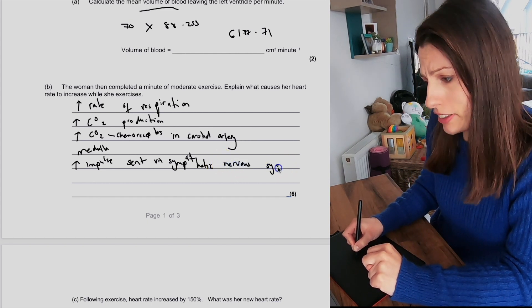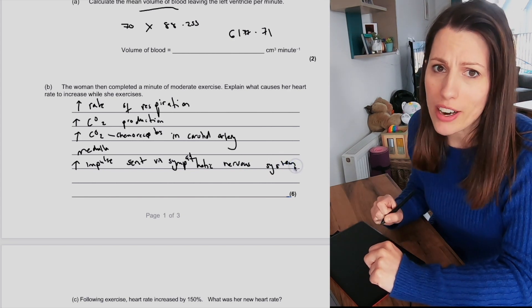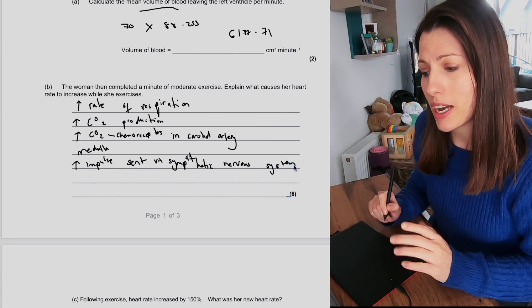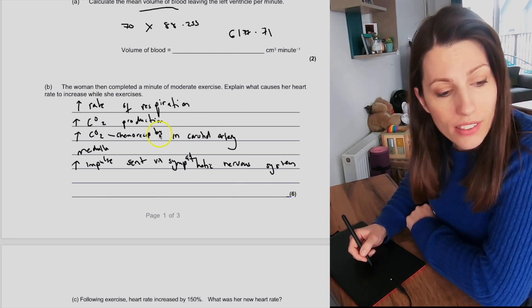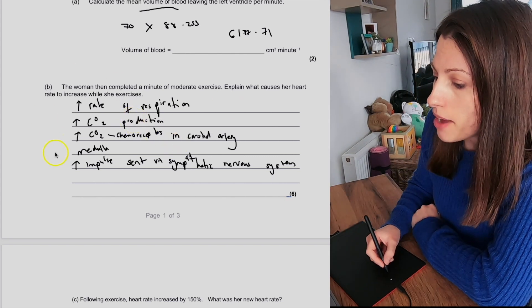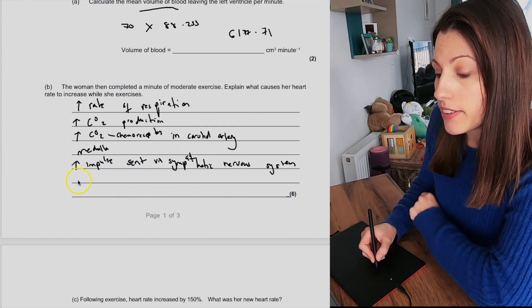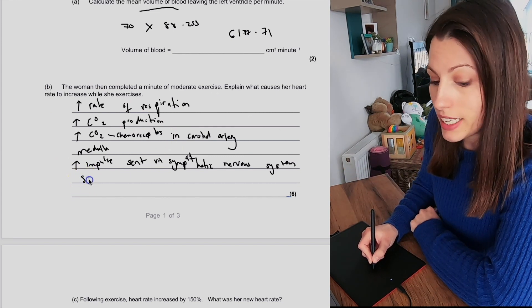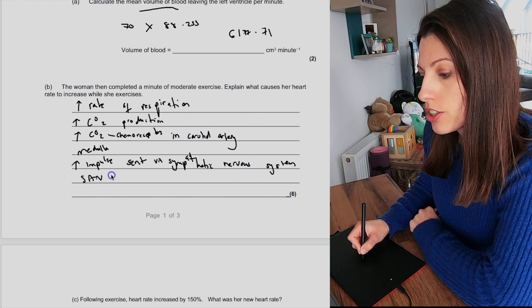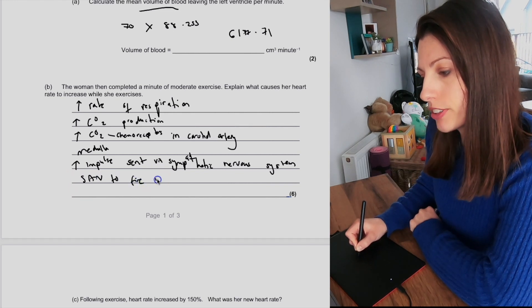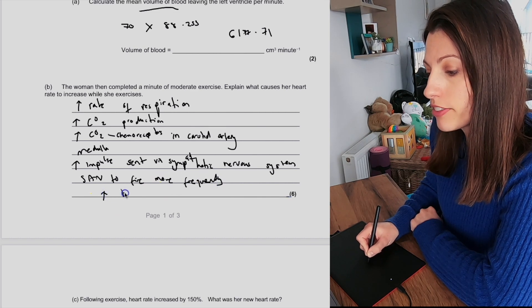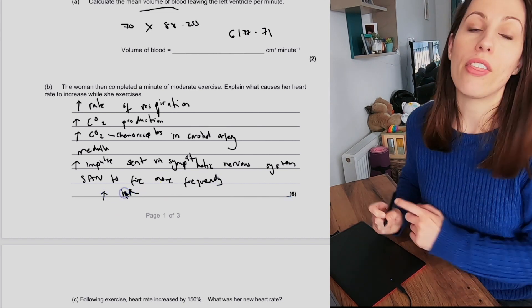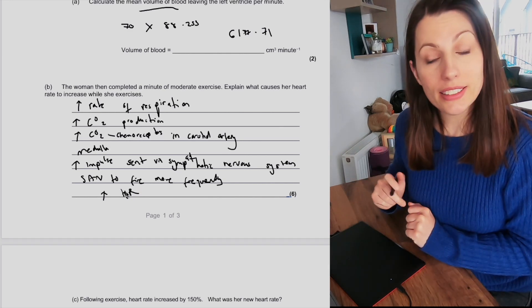Excuse my horrendous writing on here. I'm trying to write and talk at the same time, and I can talk quicker than I can write. And so then the final thing that we can add is factors go down the sympathetic nervous system that is going to cause the SAN to fire more frequently, and therefore we're going to have an increase in your heart rate. And that is why your heart rate increases when you exercise.